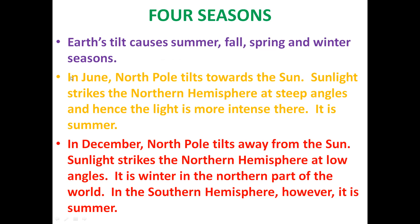In June, the north pole is tilted towards the Sun. Sunlight strikes the northern hemisphere at steep angles, so the light is more intense — it is summer. The northern hemisphere receives sunlight at steep angles, making the sunlight more intense in this area, and it is summer in June.